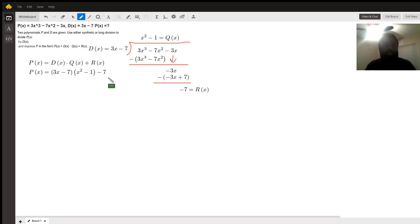So this is p expressed in terms of divisor times quotient plus remainder.